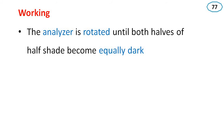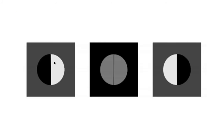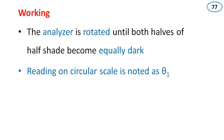The analyzer is rotated until both halves of the half-shade plate become equally dark. In the polarimeter you can see a circle: half of the circle will be dark and half will be bright. When we rotate the analyzer, there is a position where both halves are equally dark — this is the second figure condition. We rotate it to this position where both halves are equally dark. The reading on the circular scale is noted as theta 1.